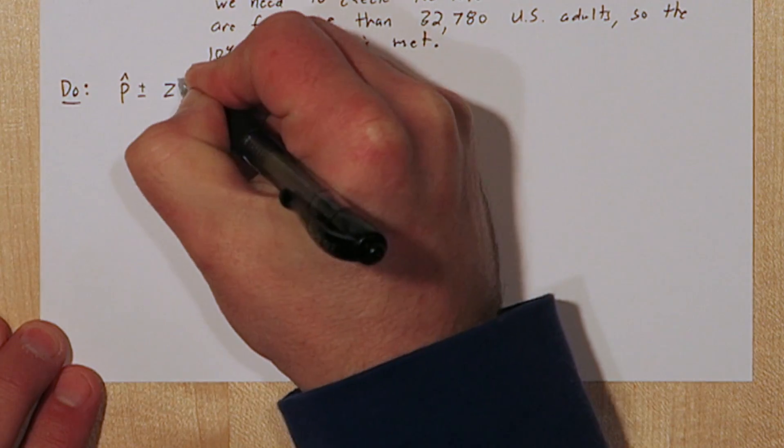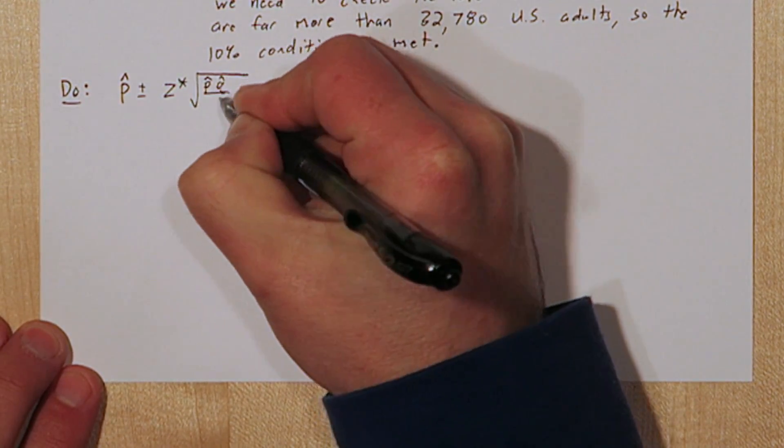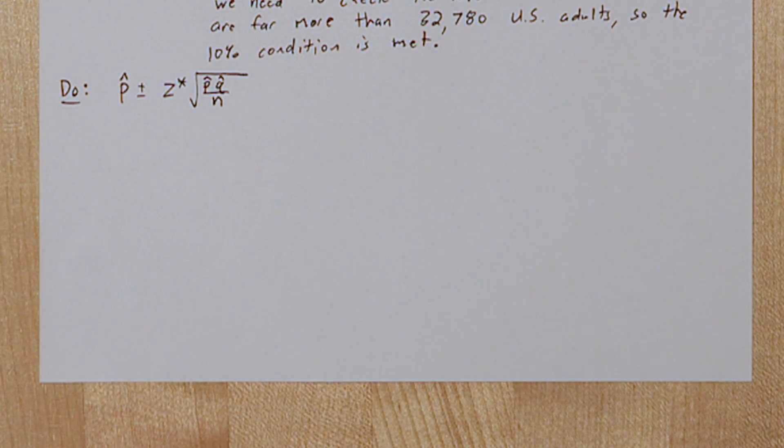The confidence interval is going to be P-hat plus or minus Z-star times the square root of P-hat Q-hat over N. We need to figure out what Z-star is. That's the critical value.